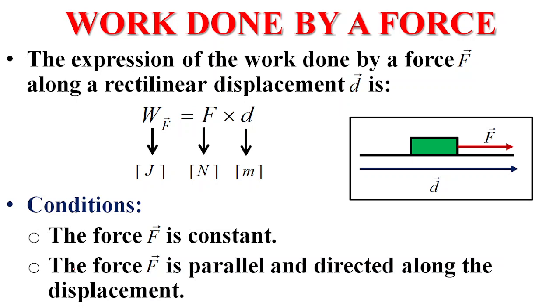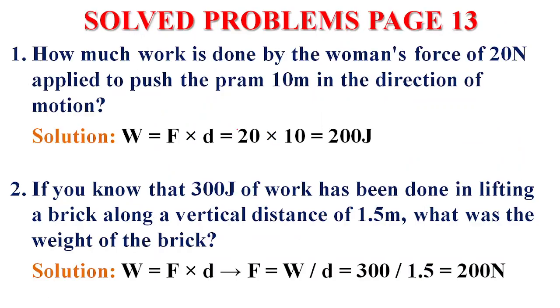The force F is constant in magnitude and direction. The force F is parallel and directed along the displacement. By using this figure, the applied force and the displacement are parallel and they have the same direction, therefore W equals F times D.